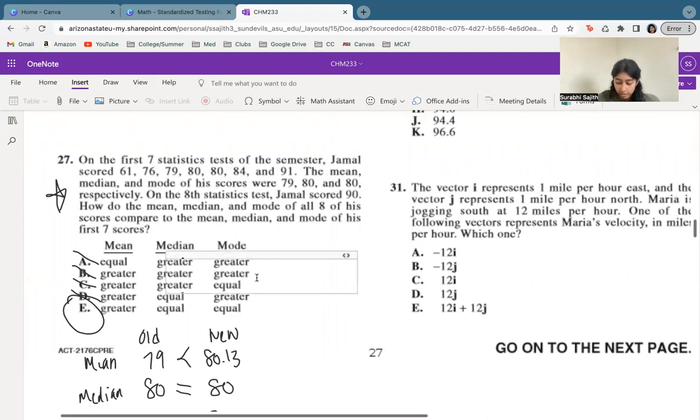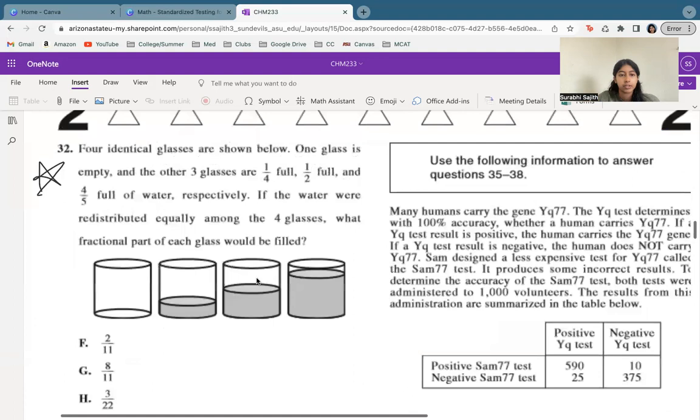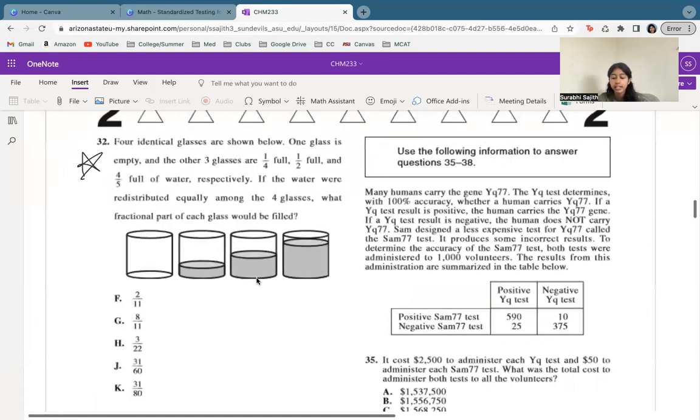All right. Let's see our next question. We're doing number 32. We have four identical glasses. And basically what they're telling us is that we can take everything and pour it into a big jug and then pour it back out equally. So if we want to find out how much would be in each one if they were equal, we need to add up everything we have, and then we need to divide it by each. Now this is just a physical representation of an average.